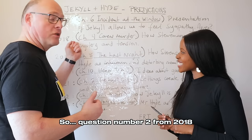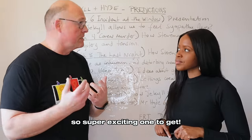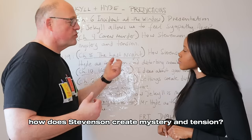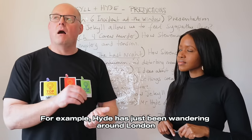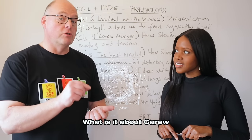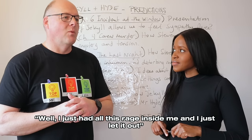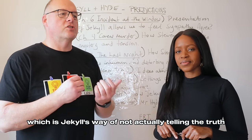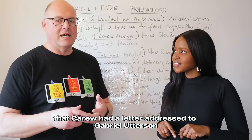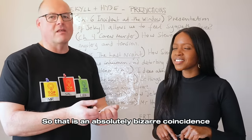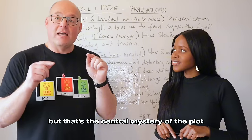Question number two from 2018: students had to look at chapter four, the murder of Carew — the most important event in the novel — and ask how Stevenson creates mystery and tension. This is an absolute gift because there are loads of mysteries with this killing. For example, Hyde has been wandering around London — what is it about Carew that makes him choose Carew as his victim? We're never told. In his confession, Jekyll says he just had all this rage inside him and let it out, which is Jekyll's way of not actually telling the truth. There's also the tantalising detail that Carew had a letter addressed to Gabriel Utterson — an absolutely bizarre coincidence.